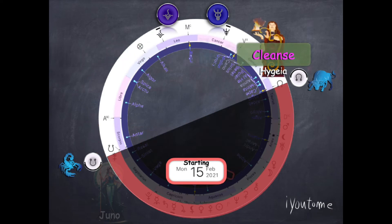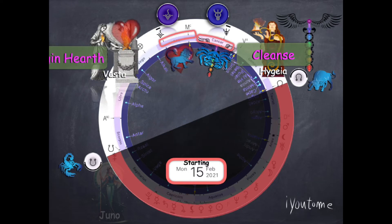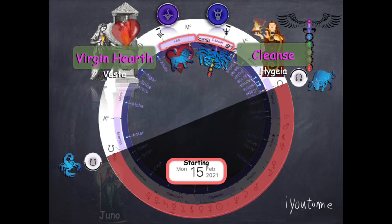We have Hygieia, goddess of cleanses and cancer, your energy field. And Vesta, the protector of the hearth, in Leo, your heart or hearth. Again, this is no coincidence that they are the only two on one side of the chart.